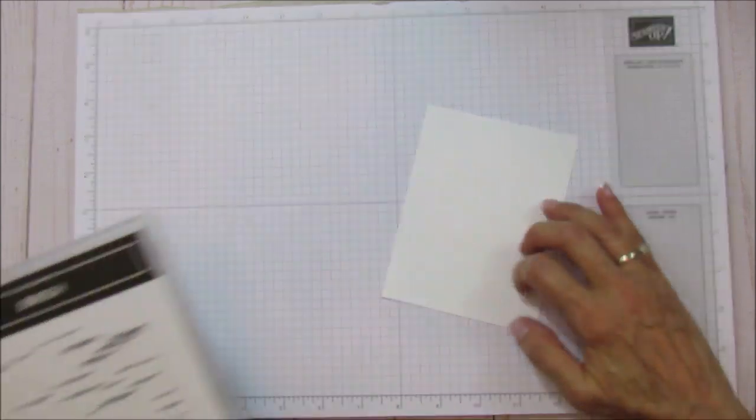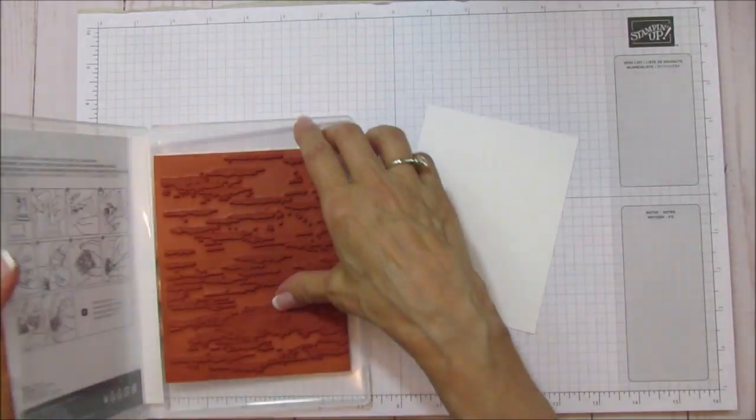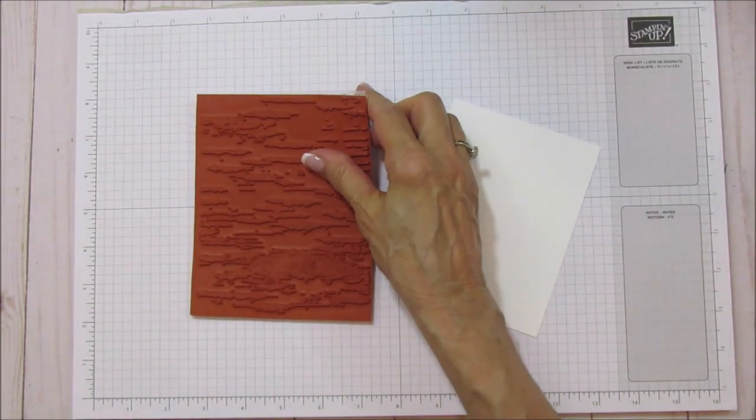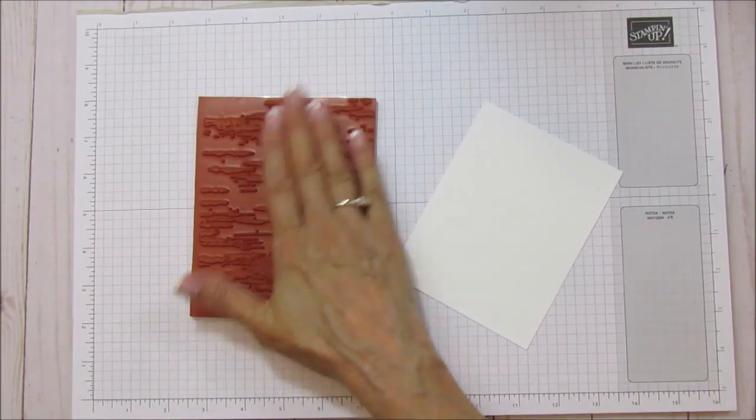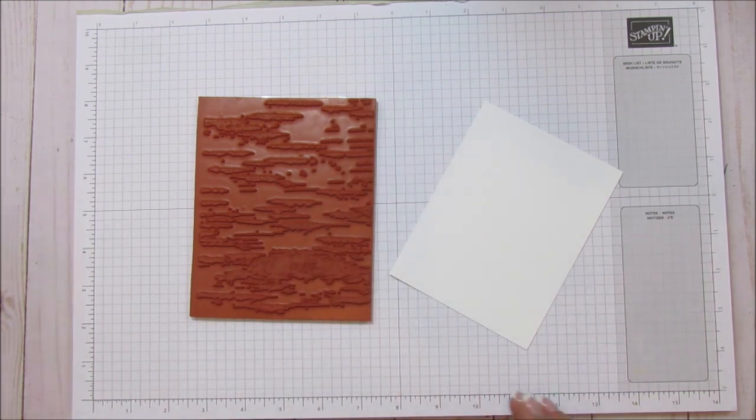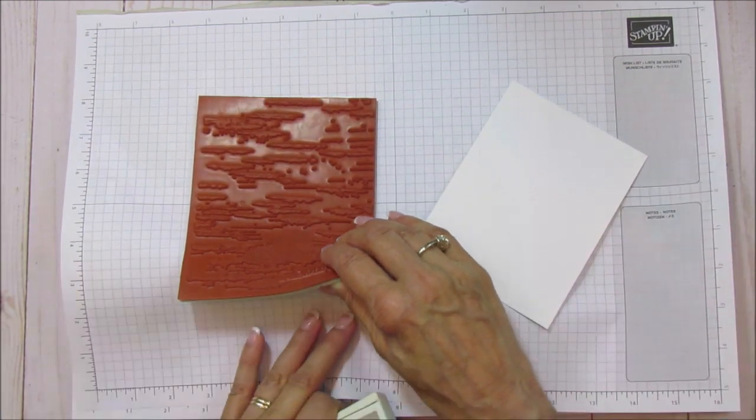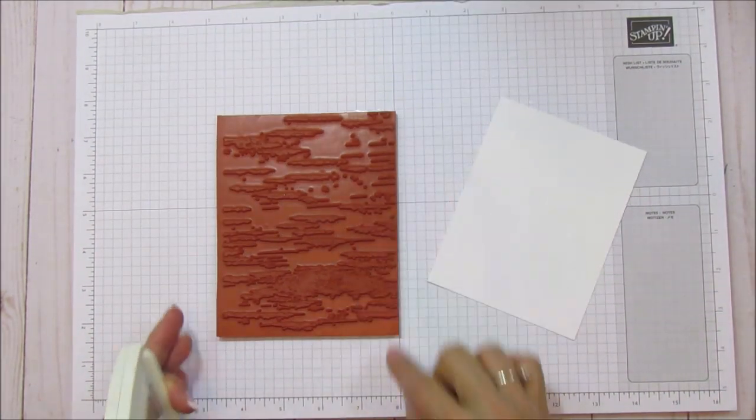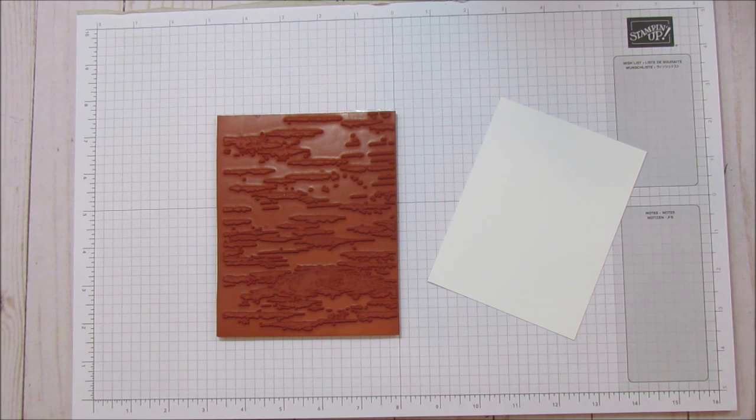This is a cling mount stamp which is very sticky. What I just do is I just lay it on here because it doesn't move once it's on there. I'm going to use crumb cake for that. I'm going to keep this straight though. So I'm going to line it up so that it's straight on my card when I put that down.